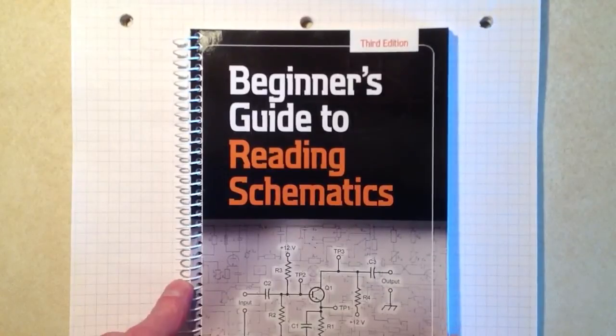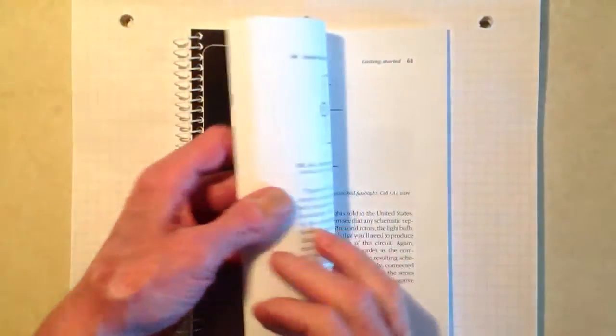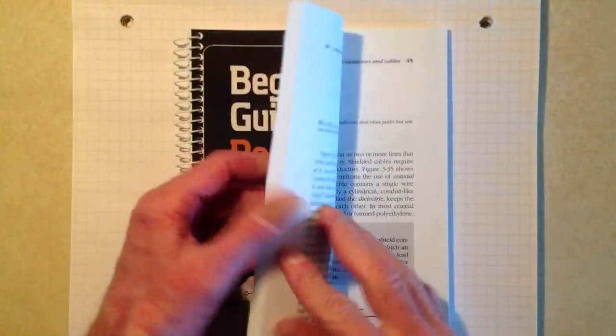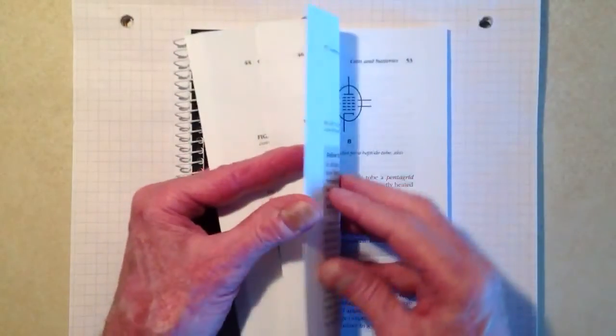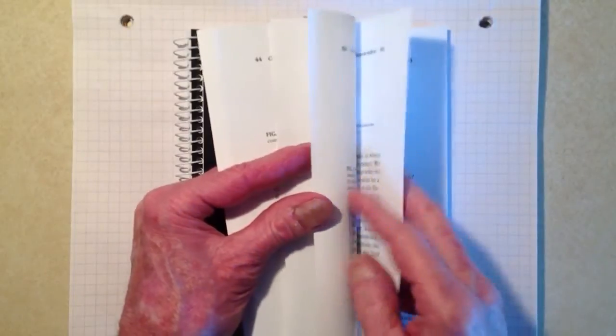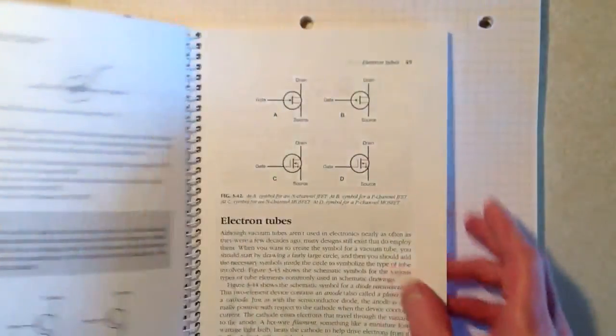So let's get right to it. What I'm going to get into here in this little tutorial is the basic symbology for semiconductor transistors.